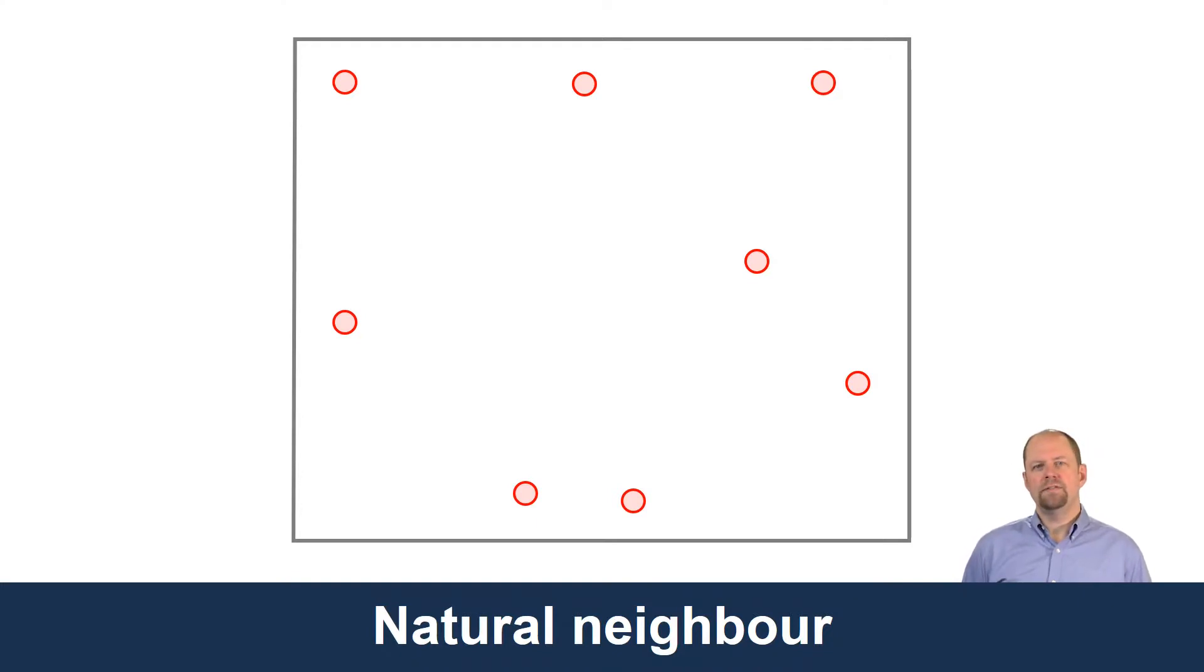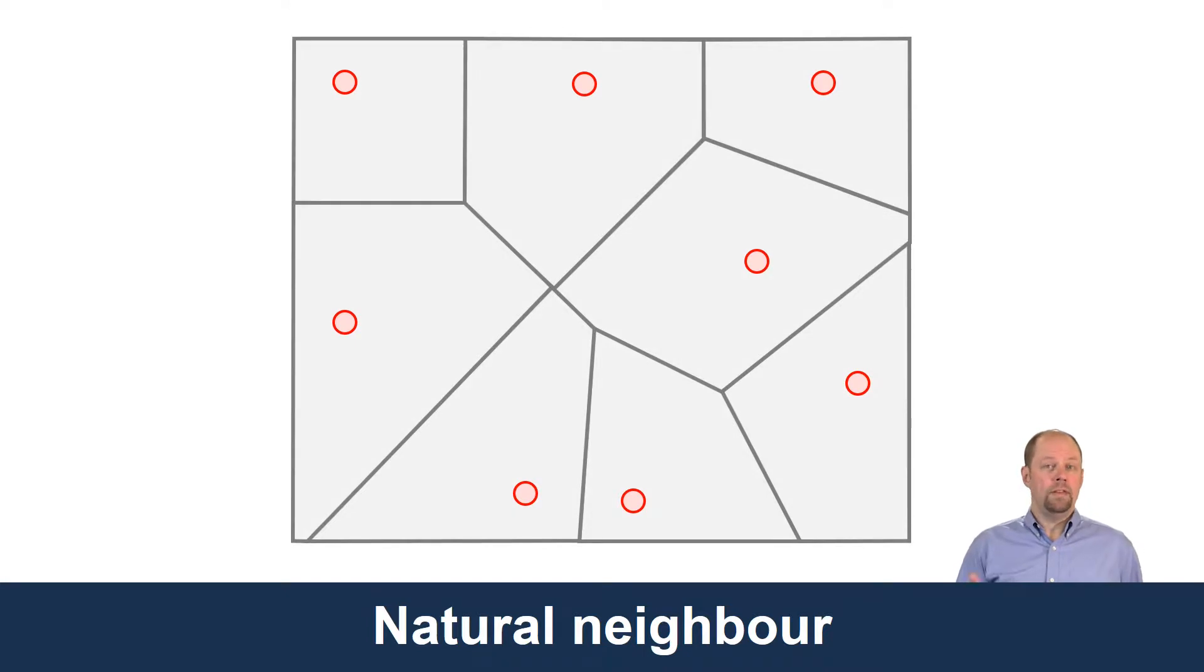If we have a set of sample points, we can create Thiessen polygons around them. We're creating a line that's halfway between two sample points here, another line here that's halfway between these two sample points. You connect all those lines up, you get Thiessen polygons.